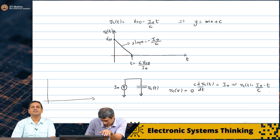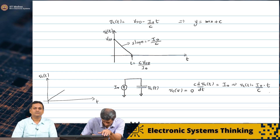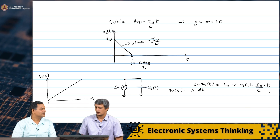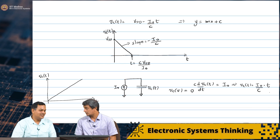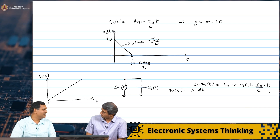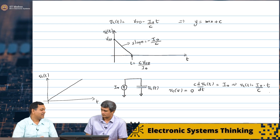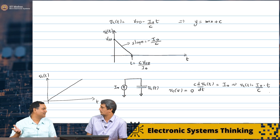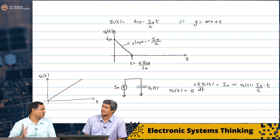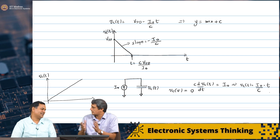Vc(t), if I plot as a function of time, starts at 0 and simply goes up. Now the question is: in the previous case, what if I wait beyond C·VDD/I naught? And what happens here if I just wait till eternity? If I look at an ideal current source and ideal capacitor, it will just keep charging — similarly in the previous case it will keep discharging to negative voltages. Because KCL and KVL are always assumed to be satisfied, it will just keep discharging. So in reality, what are the non-idealities which will prevent this from happening?